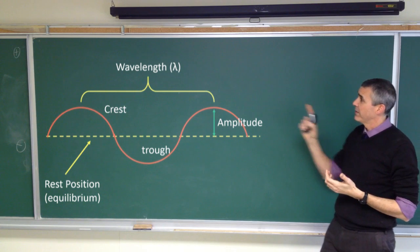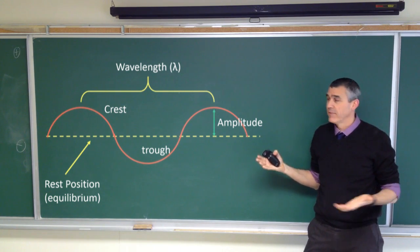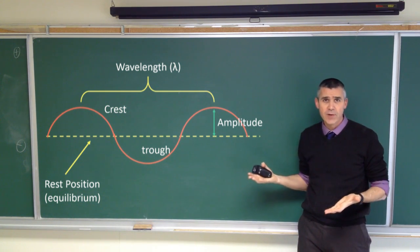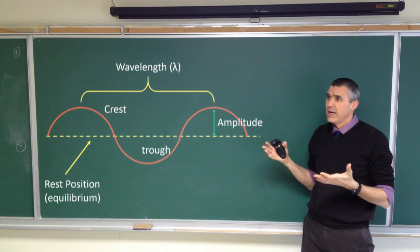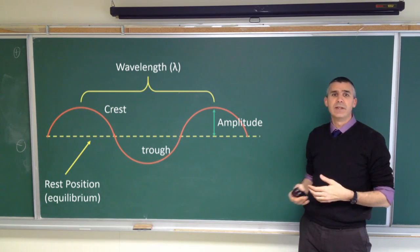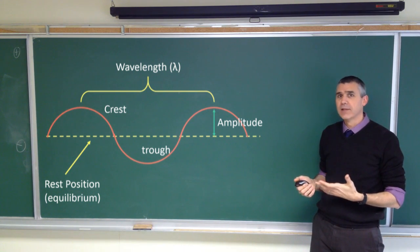And then we have the wavelength. The wavelength is, of course, the length of a wave. So the wavelength is crest to crest, or it could be trough to trough, or it could be at any point. As long as it's getting back to the same point in the cycle, we call that a wavelength - the length of one wave.